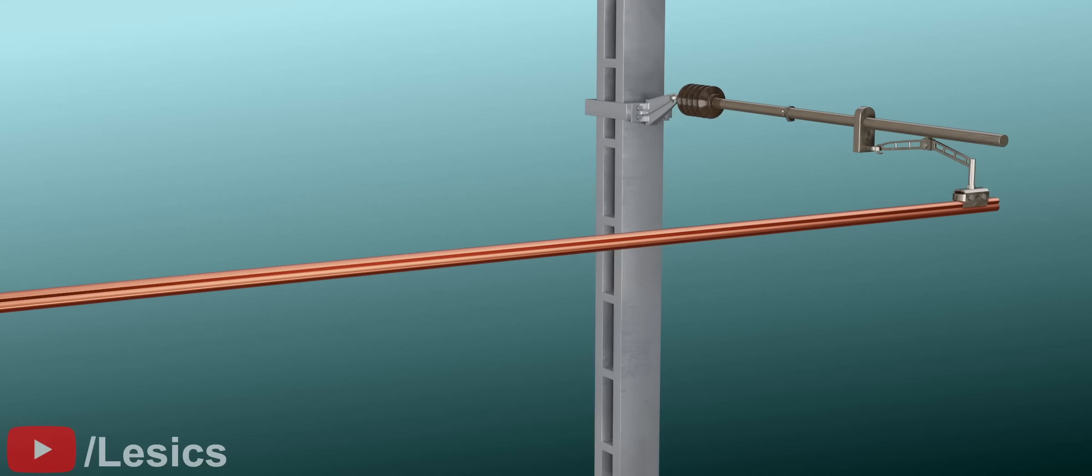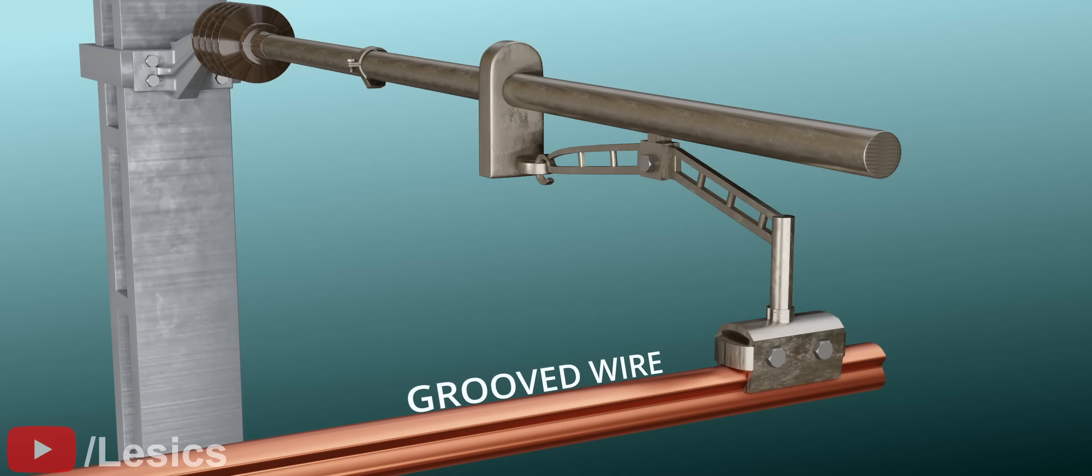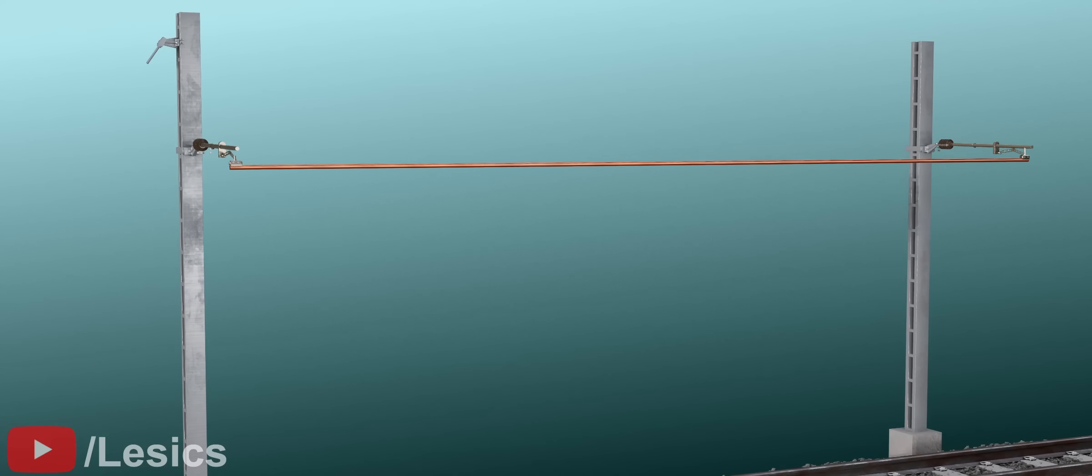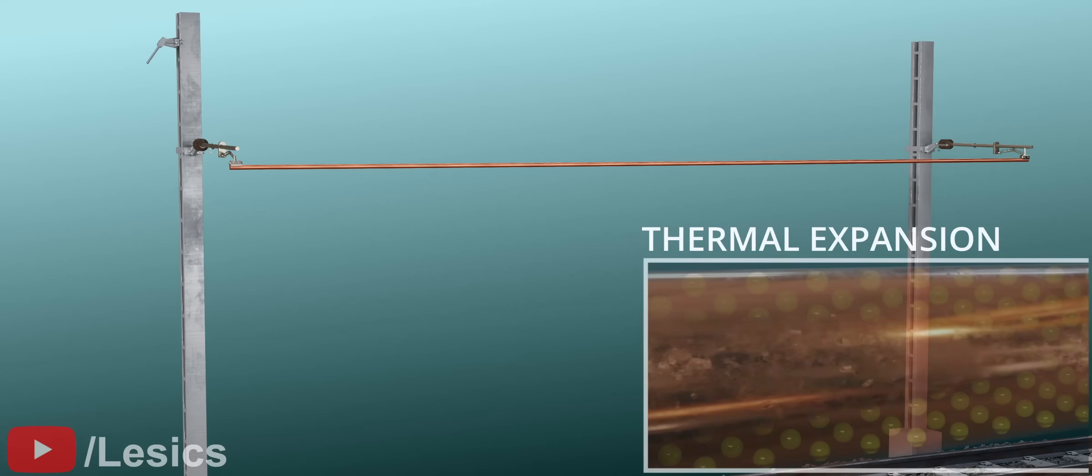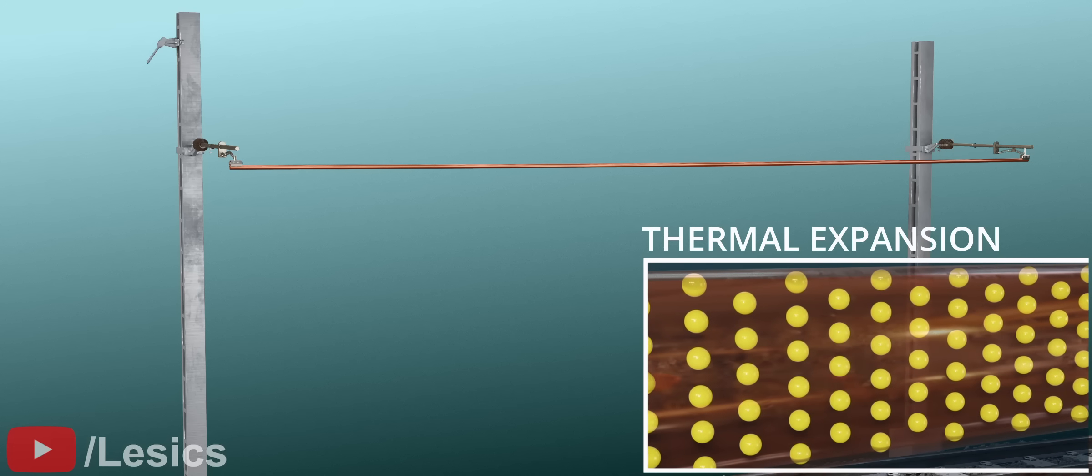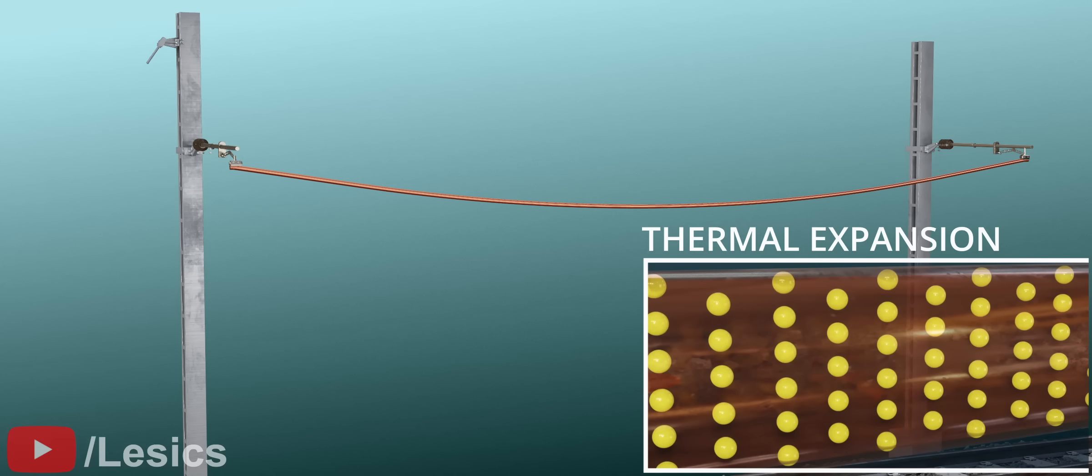In this simple case, both ends of the wire are fixed as shown. Temperature variations will cause big problems in this design. In the summertime, as the temperature increases, the material will expand. Since the ends are fixed, this will result in sagging of the wire.